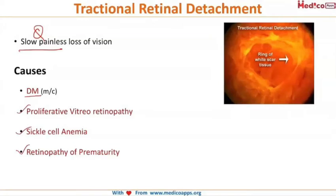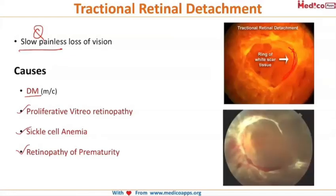What you're seeing here is scar tissue, which is formed because of the slow detachment of the retina. Here is another image showing tractional retinal detachment.